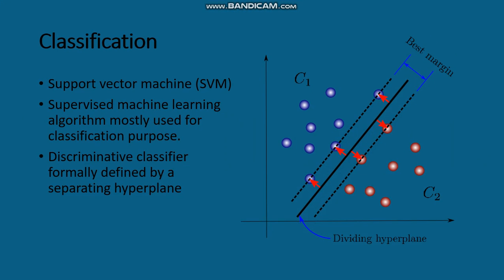For classification, SVM (Support Vector Machine) is used to categorize the acquired vibrational signal into healthy and unhealthy bearing. It is a supervised machine learning algorithm formally defined by a separating hyperplane. As you can see in the attached figure, it divides the hyperplane by drawing the margins.